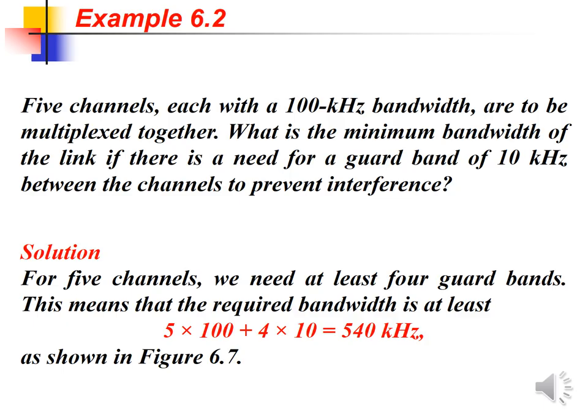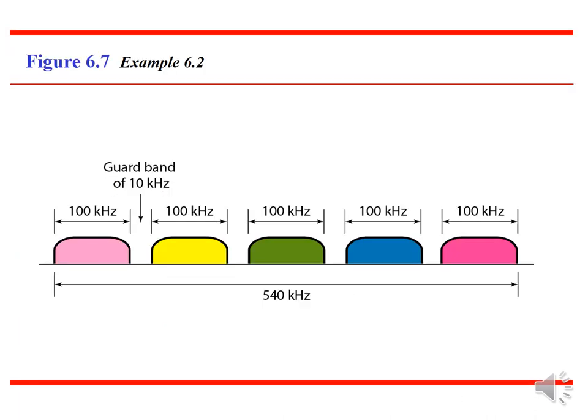Here is an example for the FDM concept. We have 5 channels, each with a bandwidth of 5 kilohertz. Since we have 5 channels, the maximum number of guard bands required is 4. Therefore, the required bandwidth is 5 × 100 kilohertz plus 4 × 10 kilohertz, giving a total bandwidth of at least 540 kilohertz.